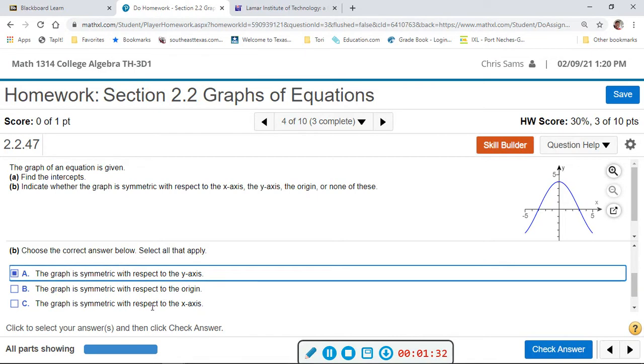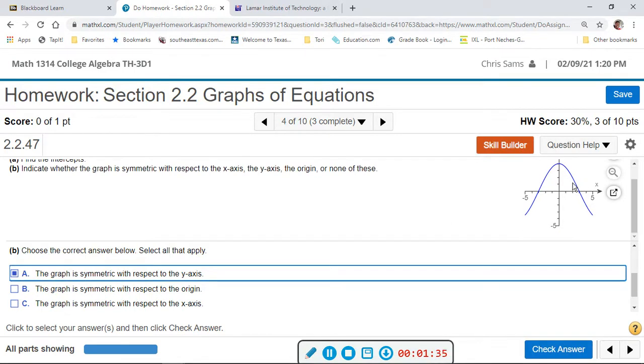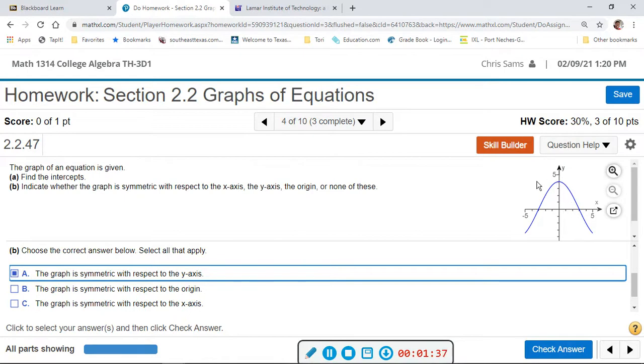Now let's check x-axis. If I were to take the piece above the x-axis and flip it below, I would need to see that same u-shape, but I do not. So it does not have x-axis symmetry.